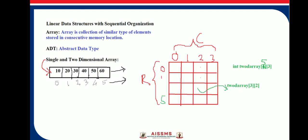For example, as given here, 'two_d_array' is the name of the array, and 3 by 2 is the size of the array.